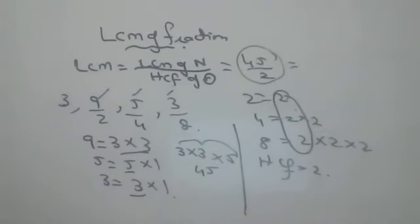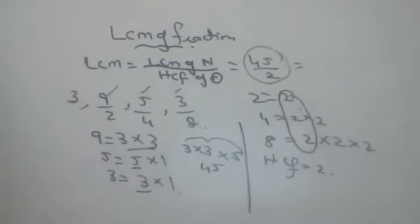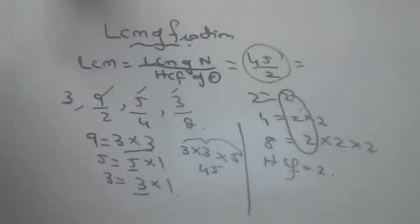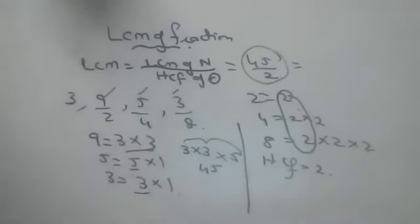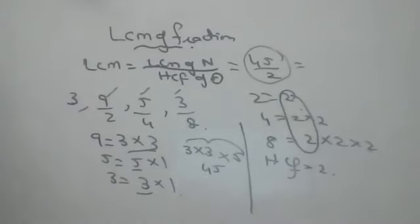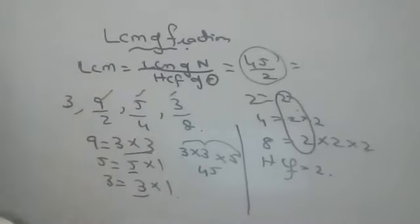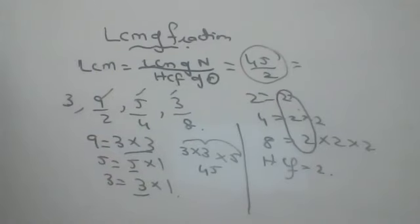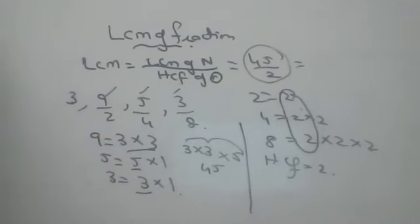So, the link already I have sent. If you don't have link, in the video description link will be there. Press this link and try to do at least 10 to 15 sums on your own. LCM of numerators, HCF of denominators. Minimum 10 to 15 sums you have to do on your own. Then only it will become perfect.